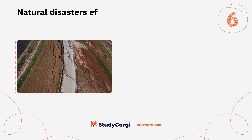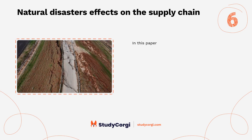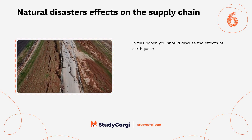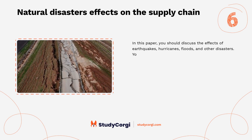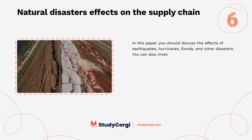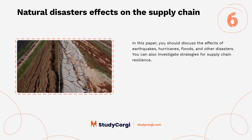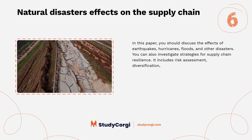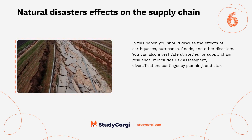Natural disasters' effects on the supply chain. In this paper, you should discuss the effects of earthquakes, hurricanes, floods, and other disasters. You can also investigate strategies for supply chain resilience, including risk assessment, diversification, contingency planning, and stakeholder collaboration.